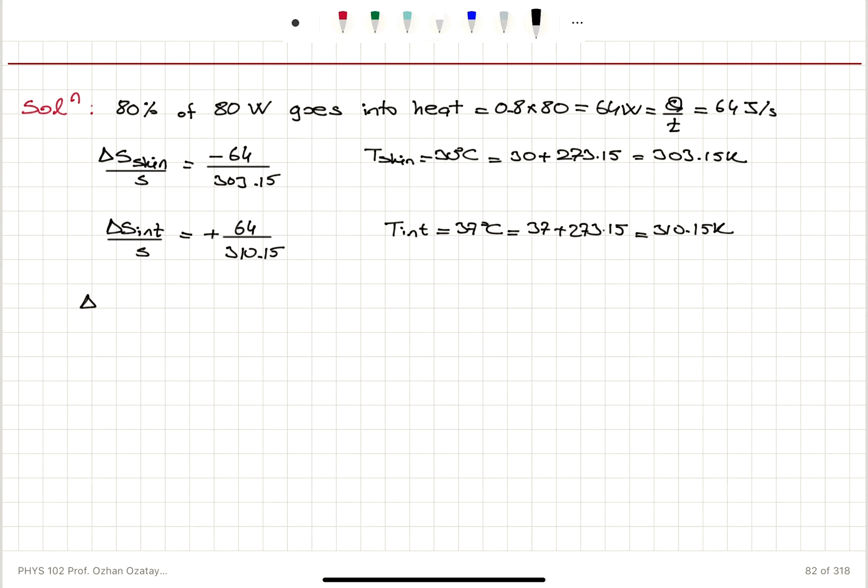Now we see the total entropy change. Delta S total per second will be 64 times minus 1 over 303.15 plus 1 over 310.15. And this gives us 64 times minus 7, 7 degrees change, 310.15 times 303.15. That's equal to minus 4.8 times 10 to minus 3 joules per Kelvin per second. So we see that the total entropy change rate is minus 4.8 times 10 to minus 3 watts per Kelvin.